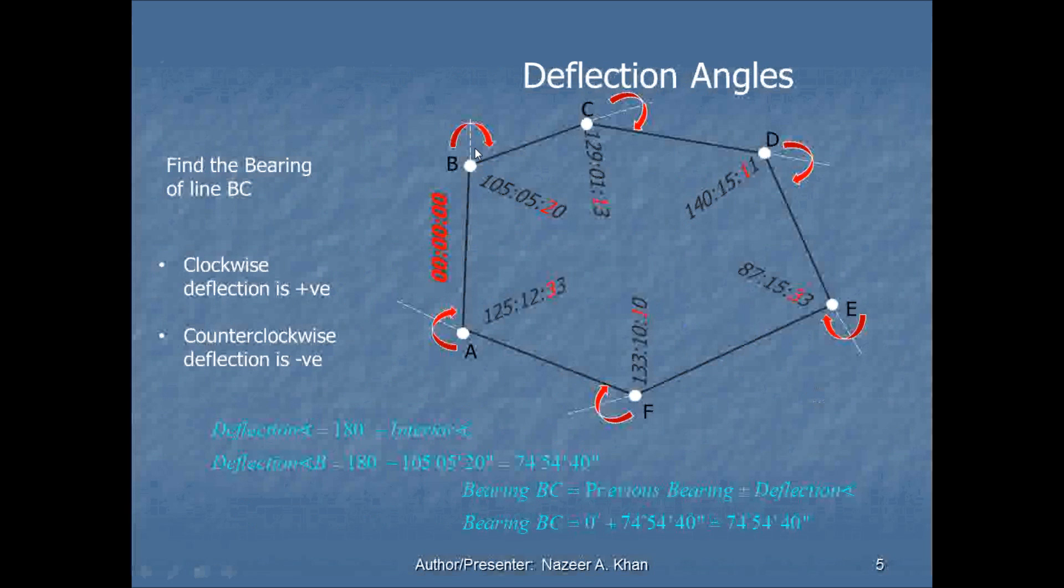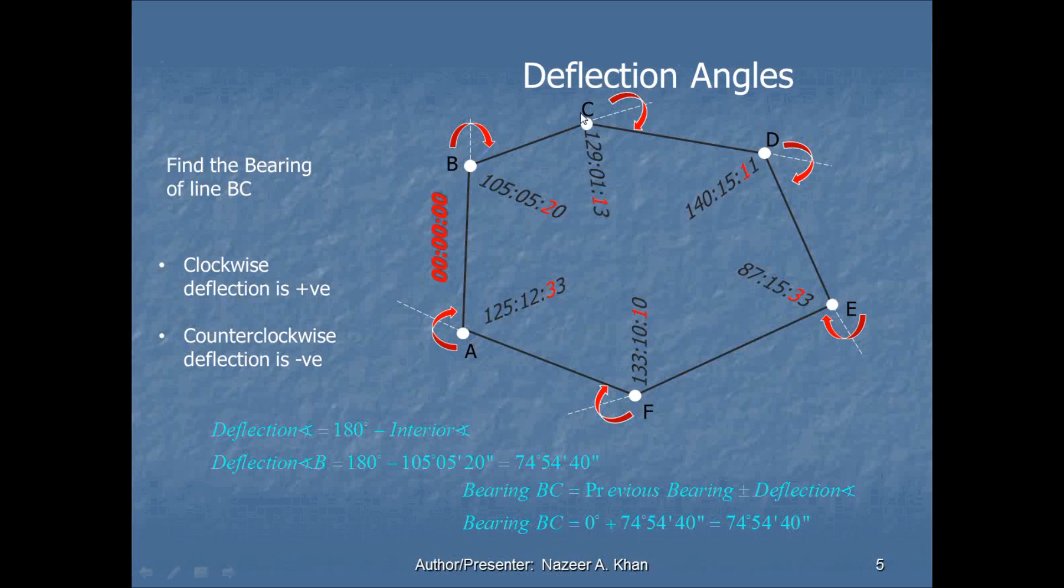When we look at our rotation or deflection, in each one of these survey stations, we could see that we have a clockwise rotation. So all of these, the deflection angles are going to be positive. All of them will be positive. Again, just a reminder, clockwise rotation is positive, counterclockwise rotation is negative. If I'm going to calculate the bearing of BC, I need to calculate that particular deflection angle, right in there.